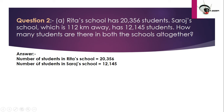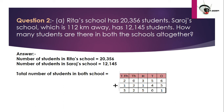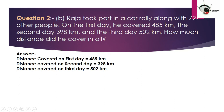We write: number of students in Rita's school and number of students in Saroj's school, then find the total number of students in both schools. Adding: 6 plus 5 is 11, carry 1; 5 plus 4 plus 1 is 10, carry 1; 3 plus 1 plus 1 is 5; then 2 and 3. We do not use 112 km in the solution.